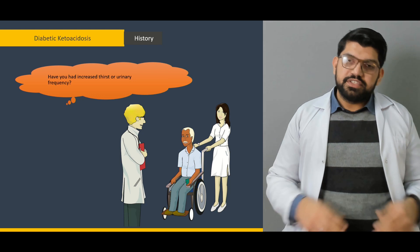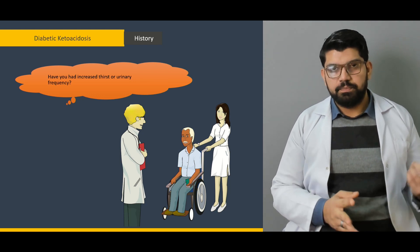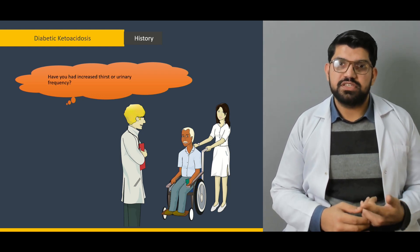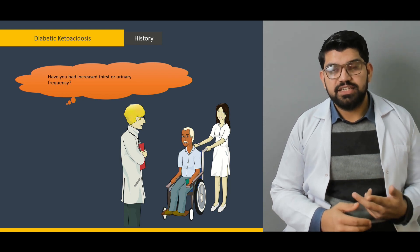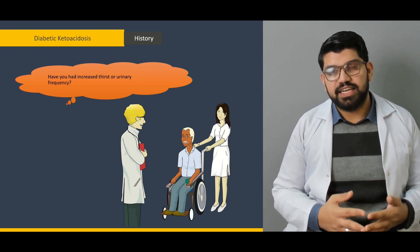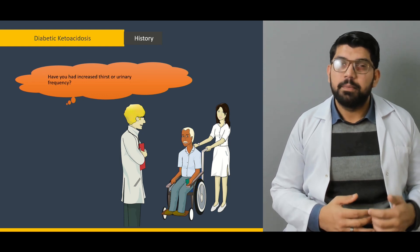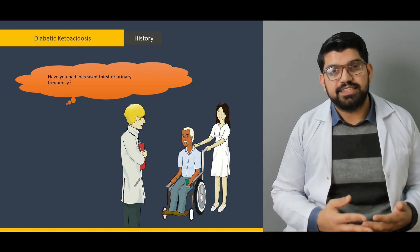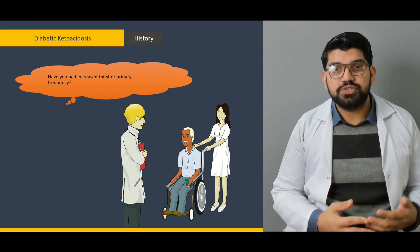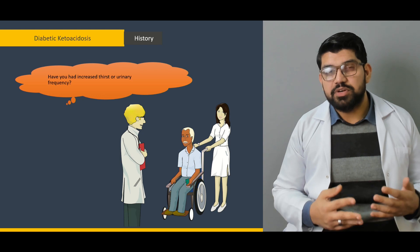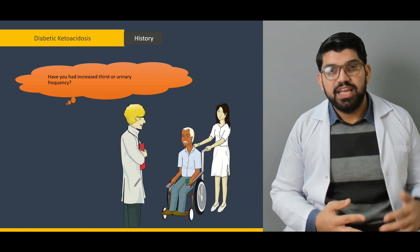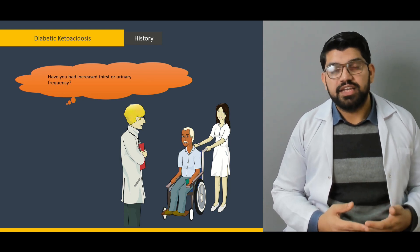Regarding history in DKA: ask the patient about signs of diabetic ketosis — increased urination or painful urination (indicating infections), increased thirst, polyphagia, any altered mental status, and any recent infections. Infections are the most common cause of diabetic ketoacidosis and can exacerbate it. So history is very important. If you're suspecting diabetic ketoacidosis, rule out any recurrent infections because that infection needs to be treated while treating DKA.